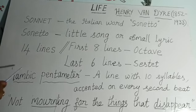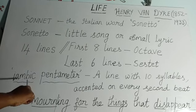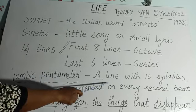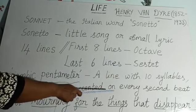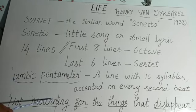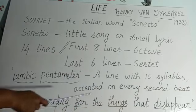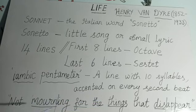This poem is written in iambic pentameter. Iambic pentameter means a line with 10 syllables accented on every second beat — 5 unstressed syllables followed by 5 stressed syllables. For example: 'Not mourning for the things that disappear.' In this line we have 10 syllables total; the underlined ones are stressed syllables and the rest are unstressed.